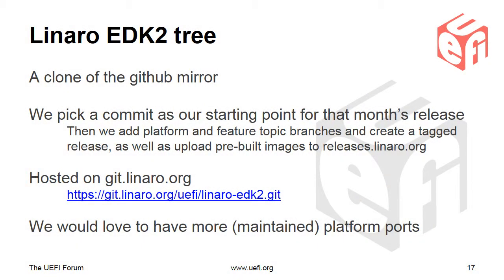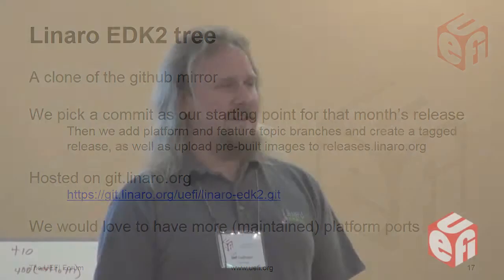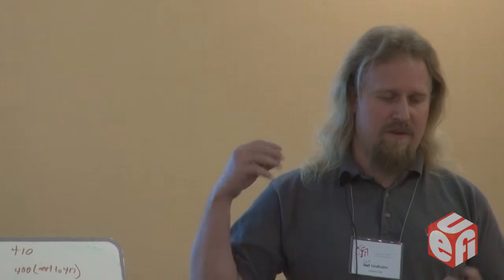At the start of every month we pick a commit upstream as the starting point for that month's release. That pretty much means I go in, look upstream, and if there are four really invasive scary patches that came in, I'll pick the commit before those; otherwise I'll just take the top of tree. Then we rebase all of our various topic branches, add all the platform support on top, create a tagged release, and post pre-built binary images up to one of the Linaro servers.